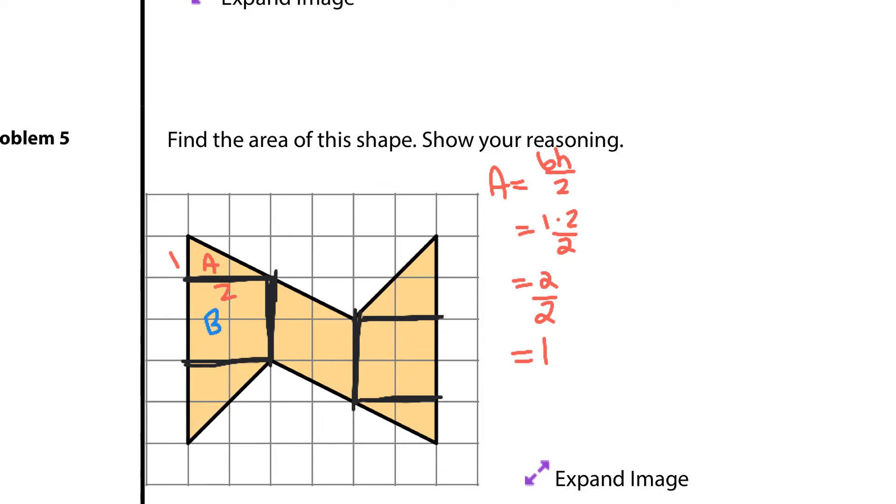And B, again, I have a two by two square. And so for B, this is going to be just length times width, or side squared, which is two times two. Oh, got ahead of myself there. Two times two is four.